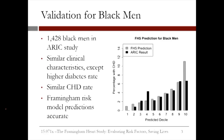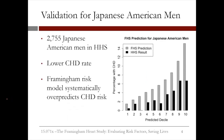For the most part, the predictions are accurate. There's one group for which the model under-predicted the risk, and one group for which the model over-predicted the risk. But for other populations, the Framingham model was not as accurate.